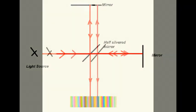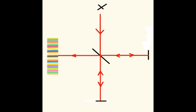The idea was that when the interferometer was rotated through 90 degrees, the interference pattern would change.